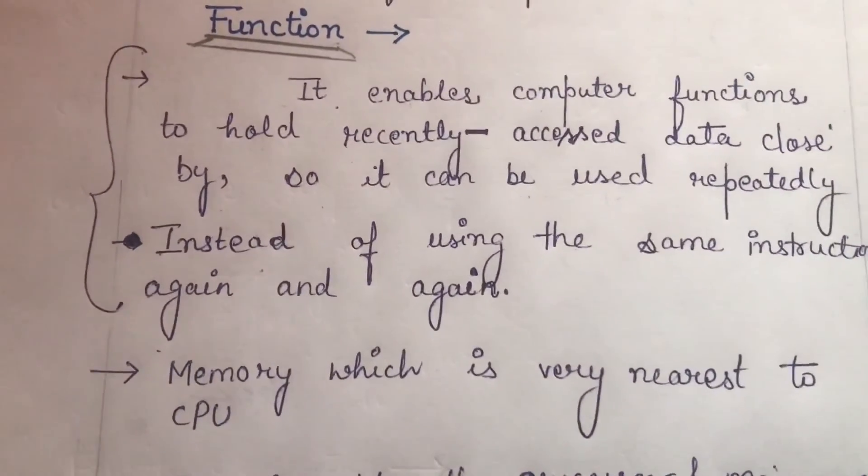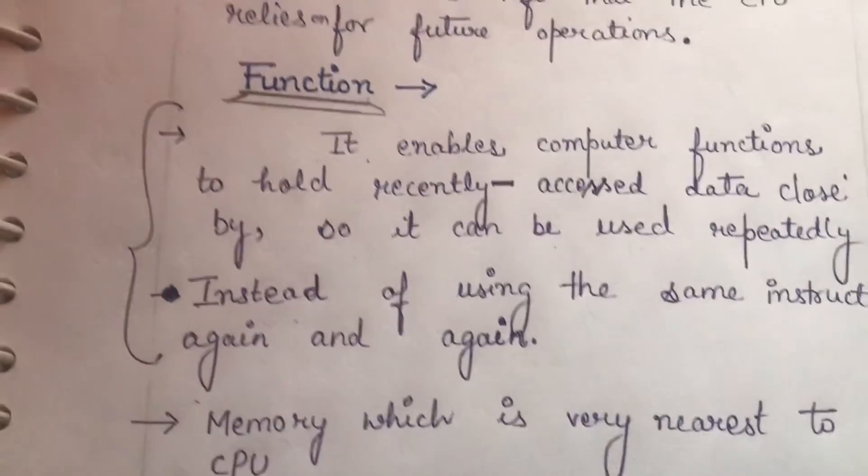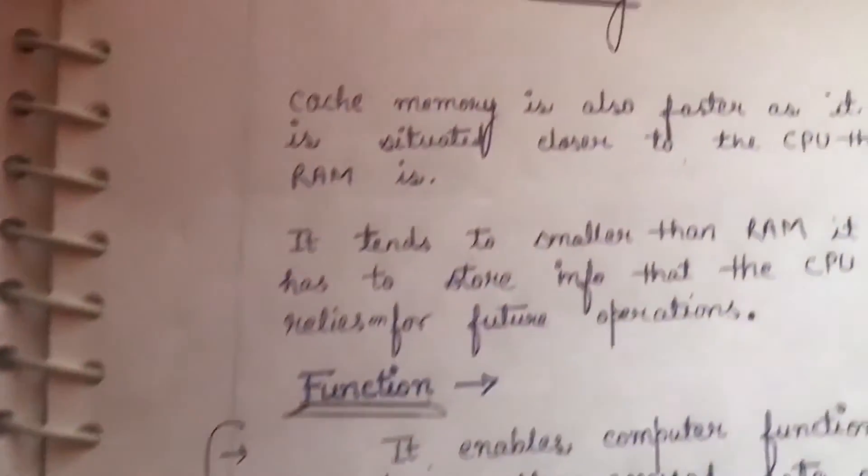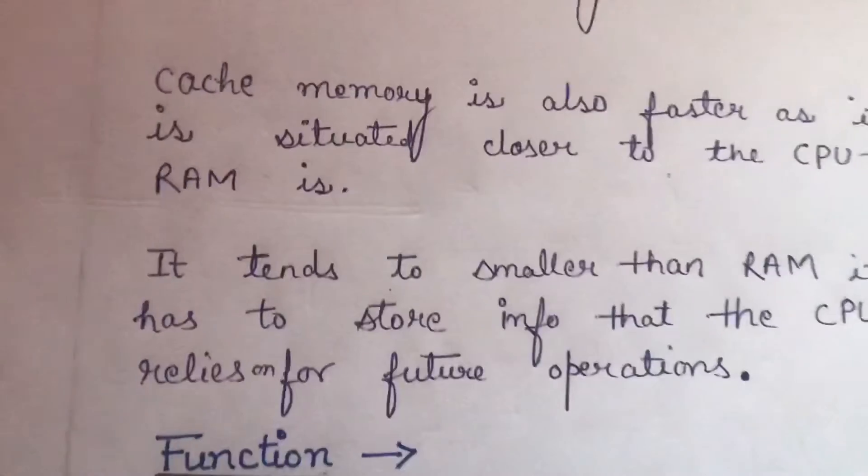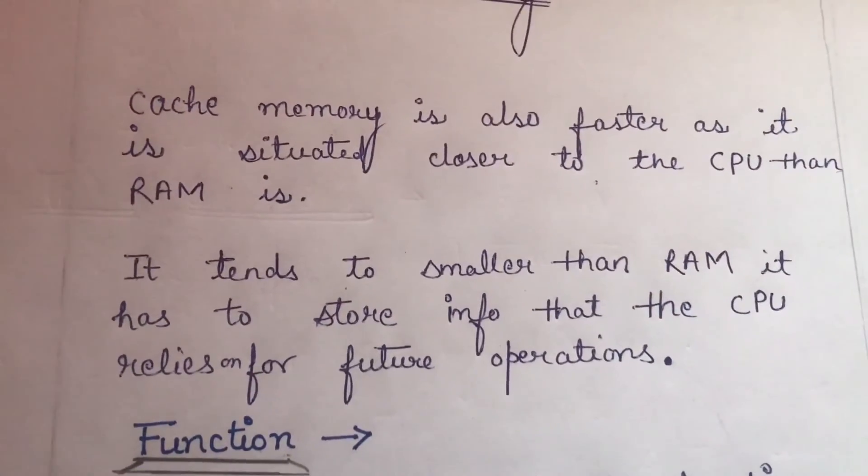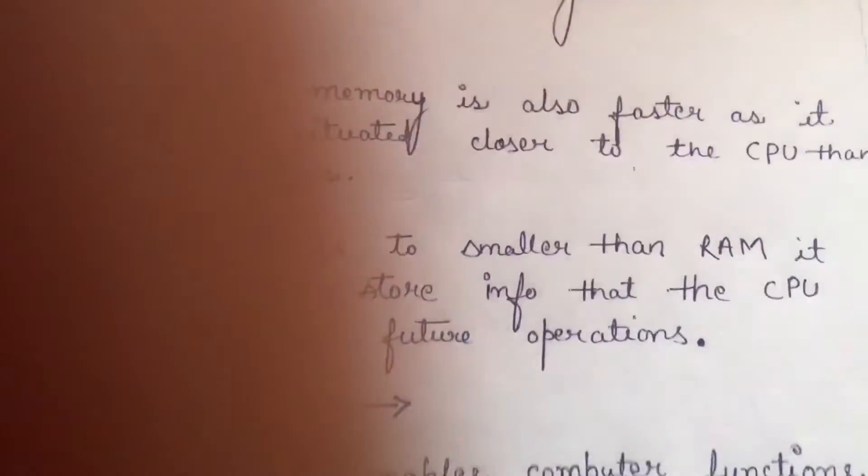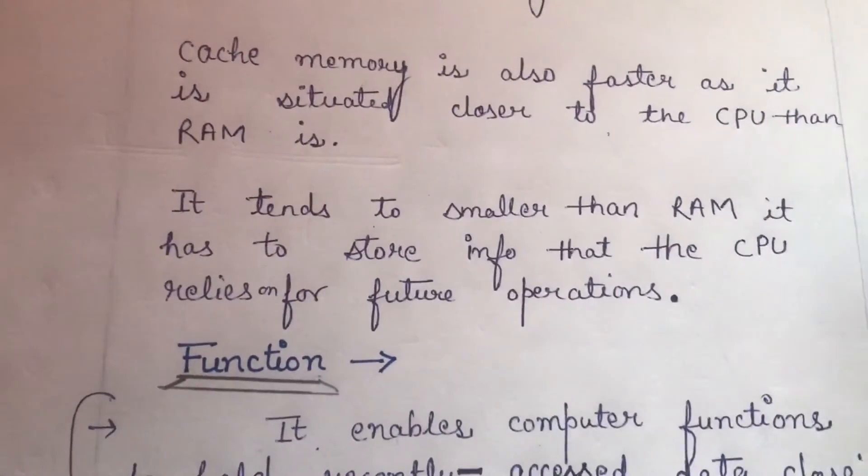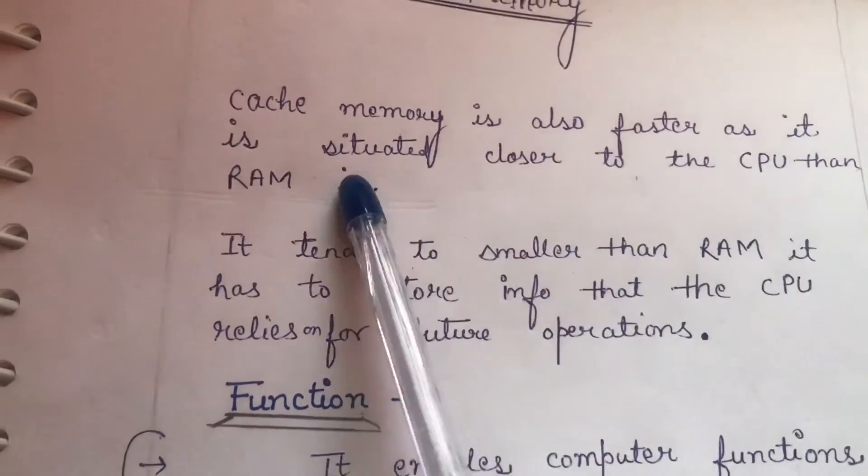Now let's see what is the relation with RAM. Cache memory is also faster as it is situated closer to the CPU than RAM.